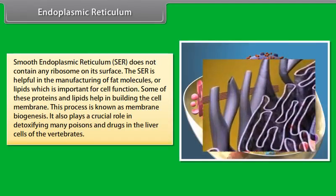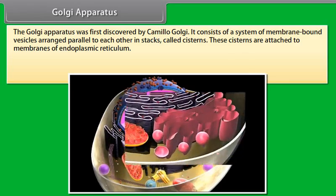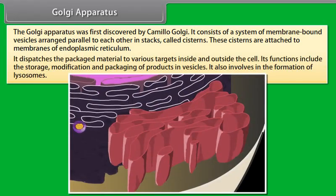Smooth endoplasmic reticulum (SER) does not contain any ribosomes on its surface. The SER is helpful in the manufacturing of fat molecules or lipids, which are important for cell function. Some of these proteins and lipids help in building the cell membrane — this process is known as membrane biogenesis. SER also plays a crucial role in detoxifying many poisons and drugs in the liver cells of vertebrates.